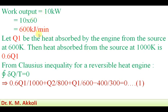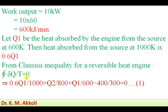Let Q1 be the heat absorbed by the engine from the source at 600 Kelvin. Then the heat absorbed from the source at 1000 Kelvin is 0.6 Q1. Applying the Clausius inequality for a reversible heat engine, the cyclic integral of δQ/T equals zero — that is, the summation of all heat transfer to temperature ratios is equal to zero.